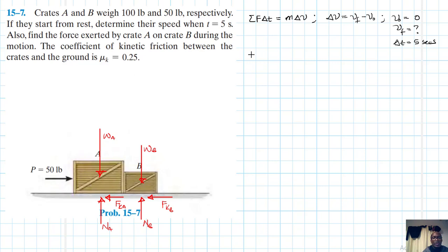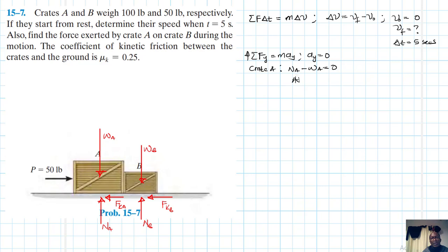Applying the summation of forces in the y-direction equal to m times a_y, and since a_y equals zero, for crate A: NA minus WA equals zero, so NA equals WA equals 100 pounds. For crate B: NB minus WB equals zero, so NB equals WB equals 50 pounds.